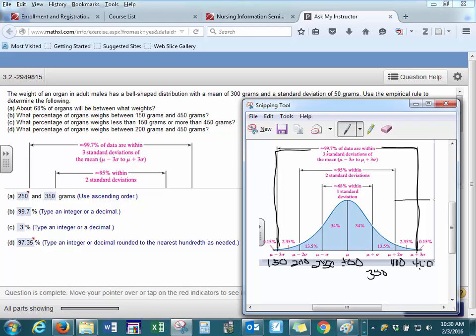Within three standard deviations, we should see 99.7% of our data.